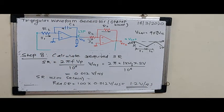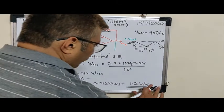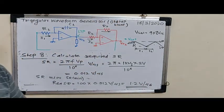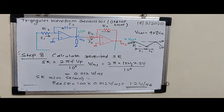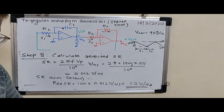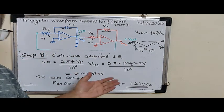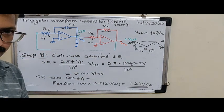So this is the minimum slew rate that is required for the operational amplifier. This finishes the design of the triangular waveform generator. I would want all of you to work out this design using multisim and verify the performance. Thank you.